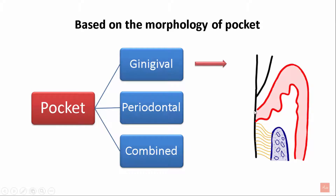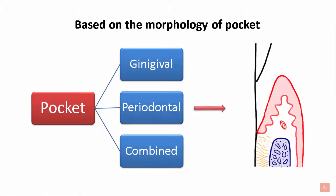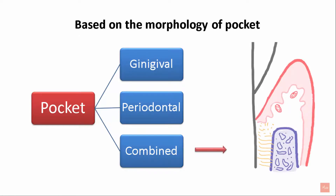A gingival pocket is characterized by coronal advancement of the gingival margin and is not associated with underlying loss of periodontal tissues. A periodontal pocket, however, also called a true pocket, is associated with loss of underlying periodontal structures, including the connective tissue fibers and apical migration of the junctional epithelium. A combined pocket is a combination of overgrowth of gingiva in the coronal direction as well as destruction or loss of the underlying connective tissue attachment, leading to a deepened gingival sulcus.